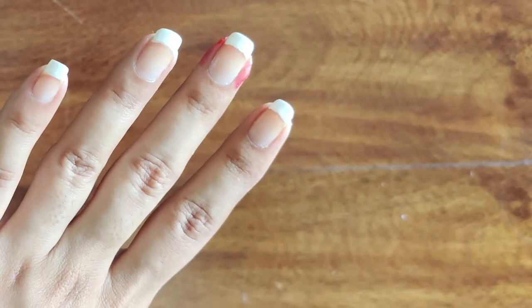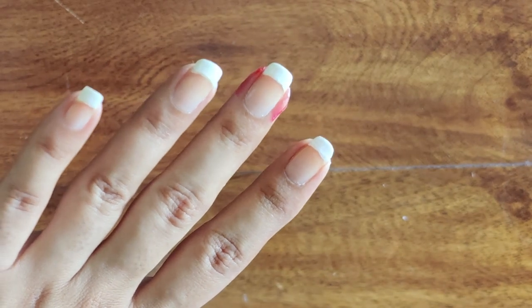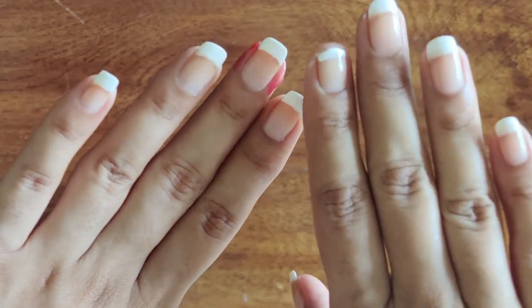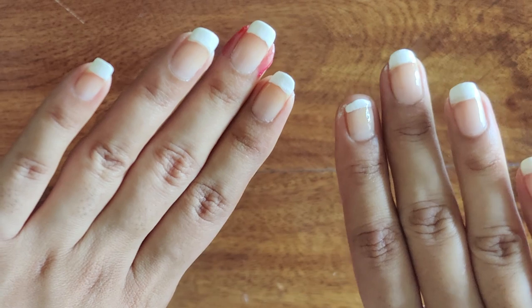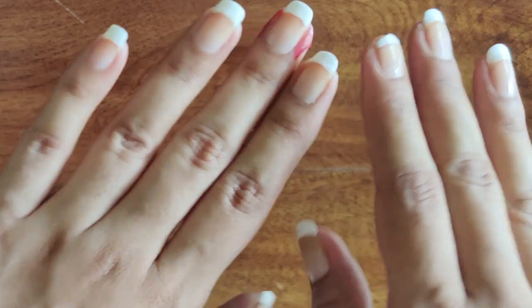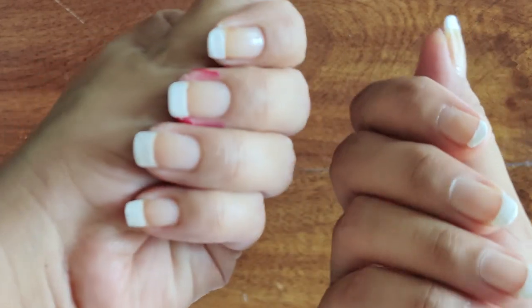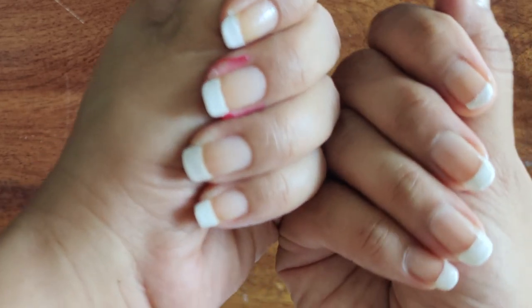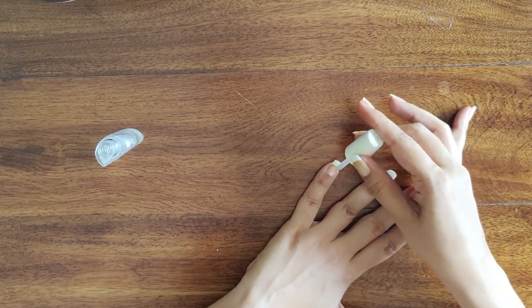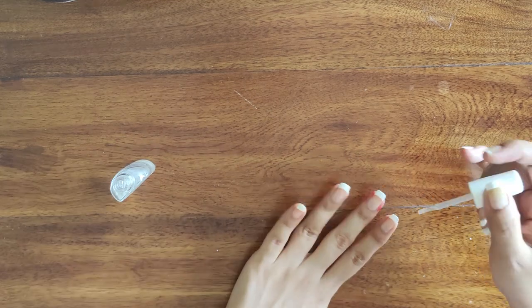Now I'll just wait for this layer of clear coat to dry. This is what things are looking like. And then I'm going to go in with a second coat of clear nail polish.